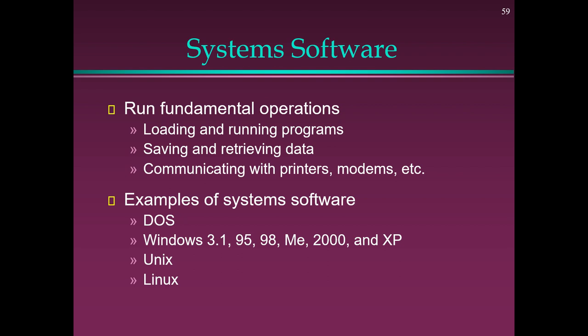System Software: Runs fundamental operations including loading and running programs, saving and retrieving data, and communicating with printers, modems, etc. Examples include DOS, Windows 3.1, Windows 95, Windows 98, Windows Me, Windows 2000, Windows XP, Unix, and Linux.